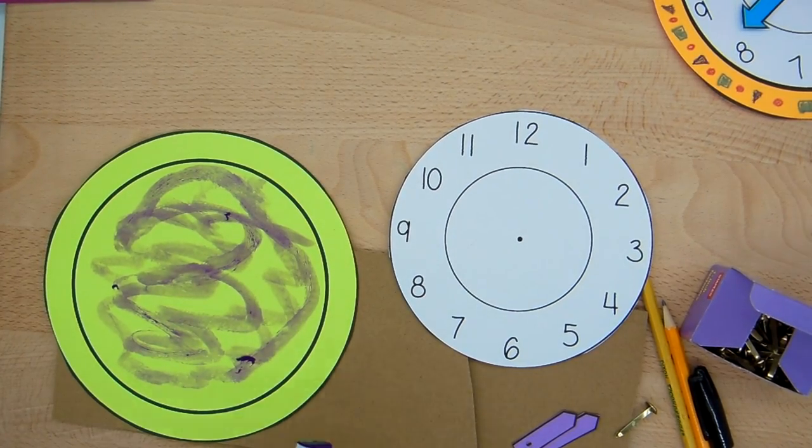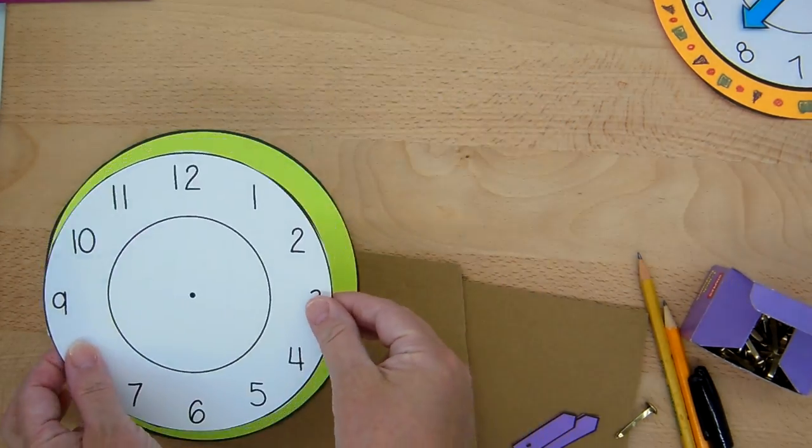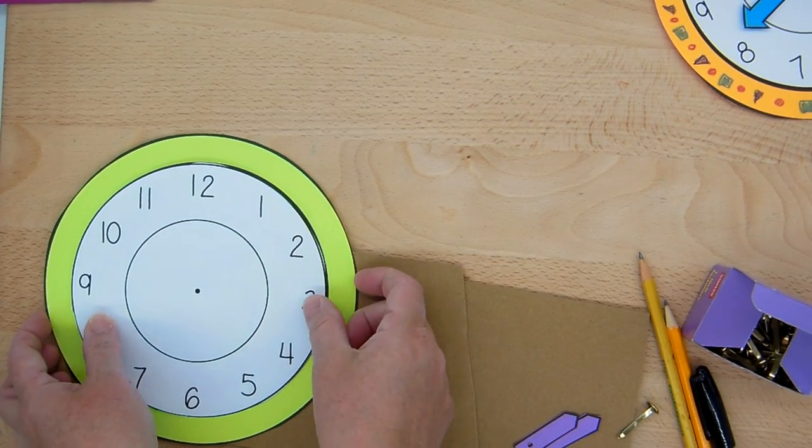Then I'm going to use my clock face, the one that has the numerals, and I'm going to mount that onto my clock frame.